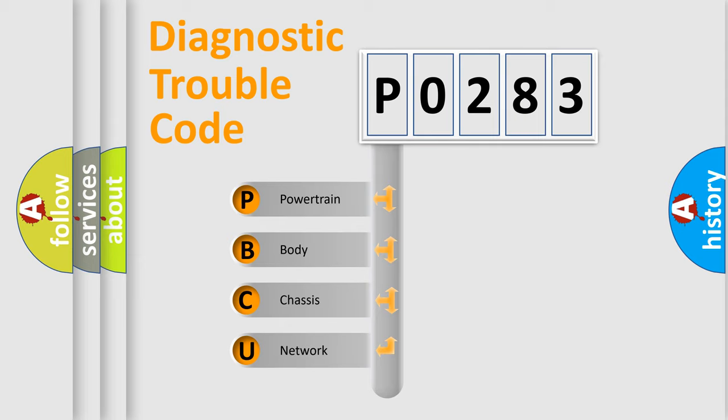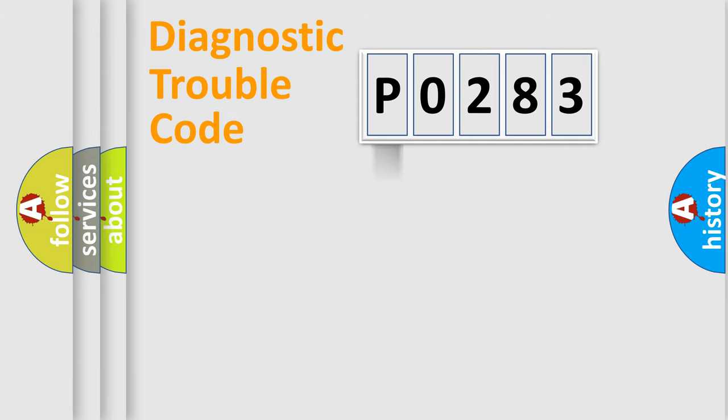We divide the electric system of automobile into four basic units: Powertrain, Body, Chassis, and Network. This distribution is defined in the first character code.